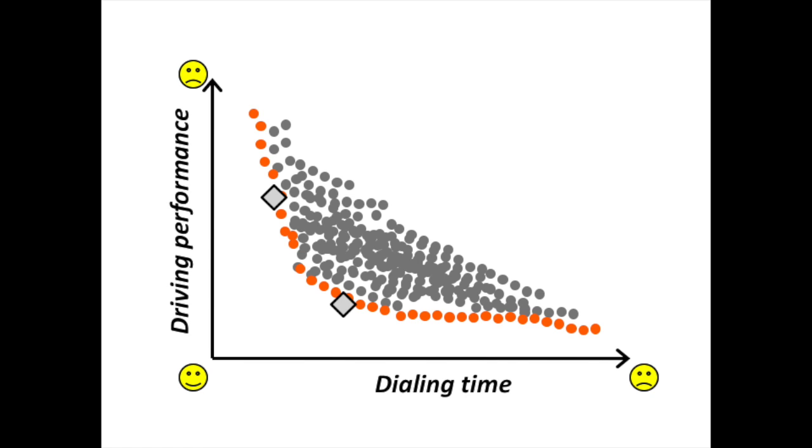When we asked participants to prioritize fast dialing, they applied more reckless strategies. However, when we asked them to prioritize the driving task, their steering performance was a lot better.